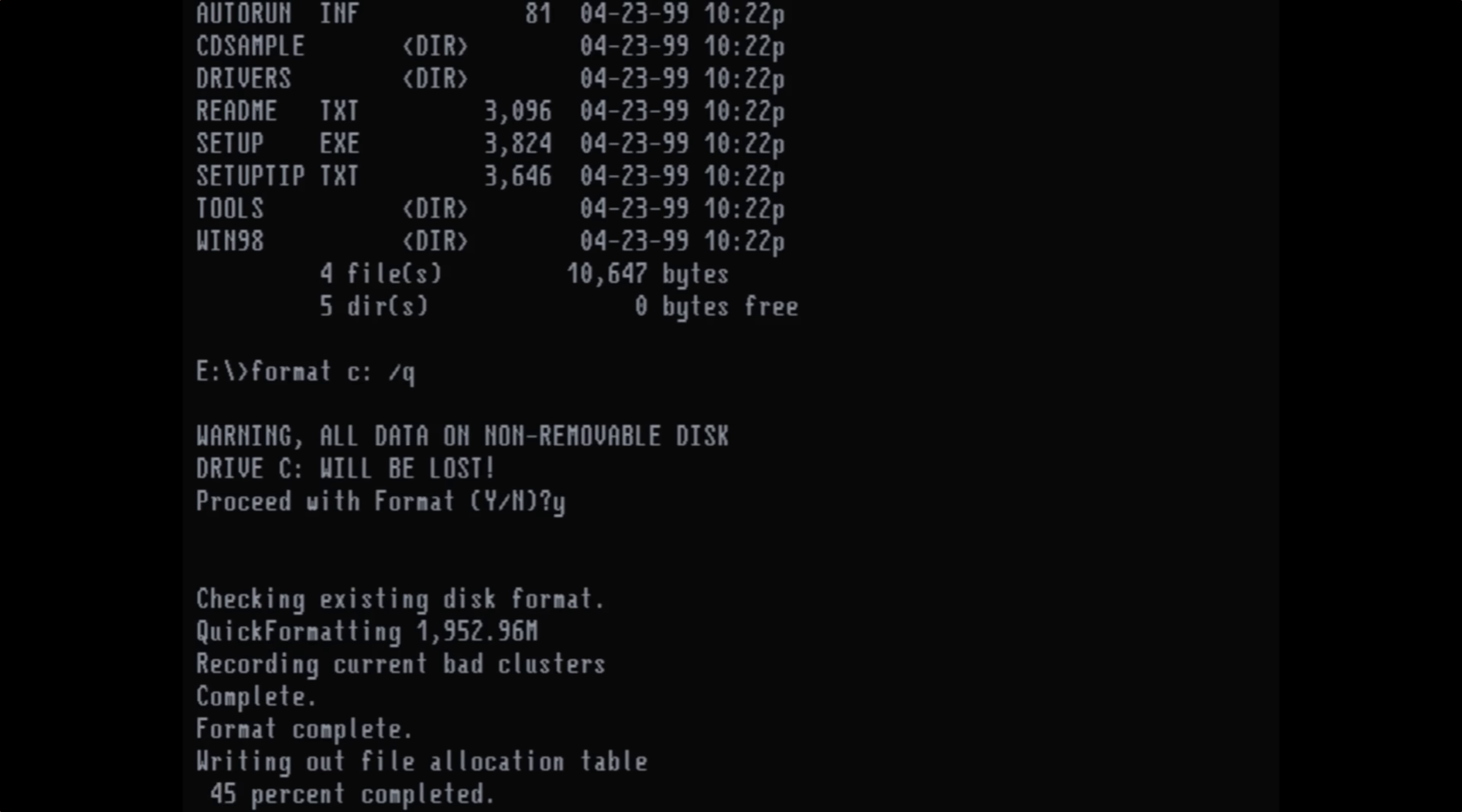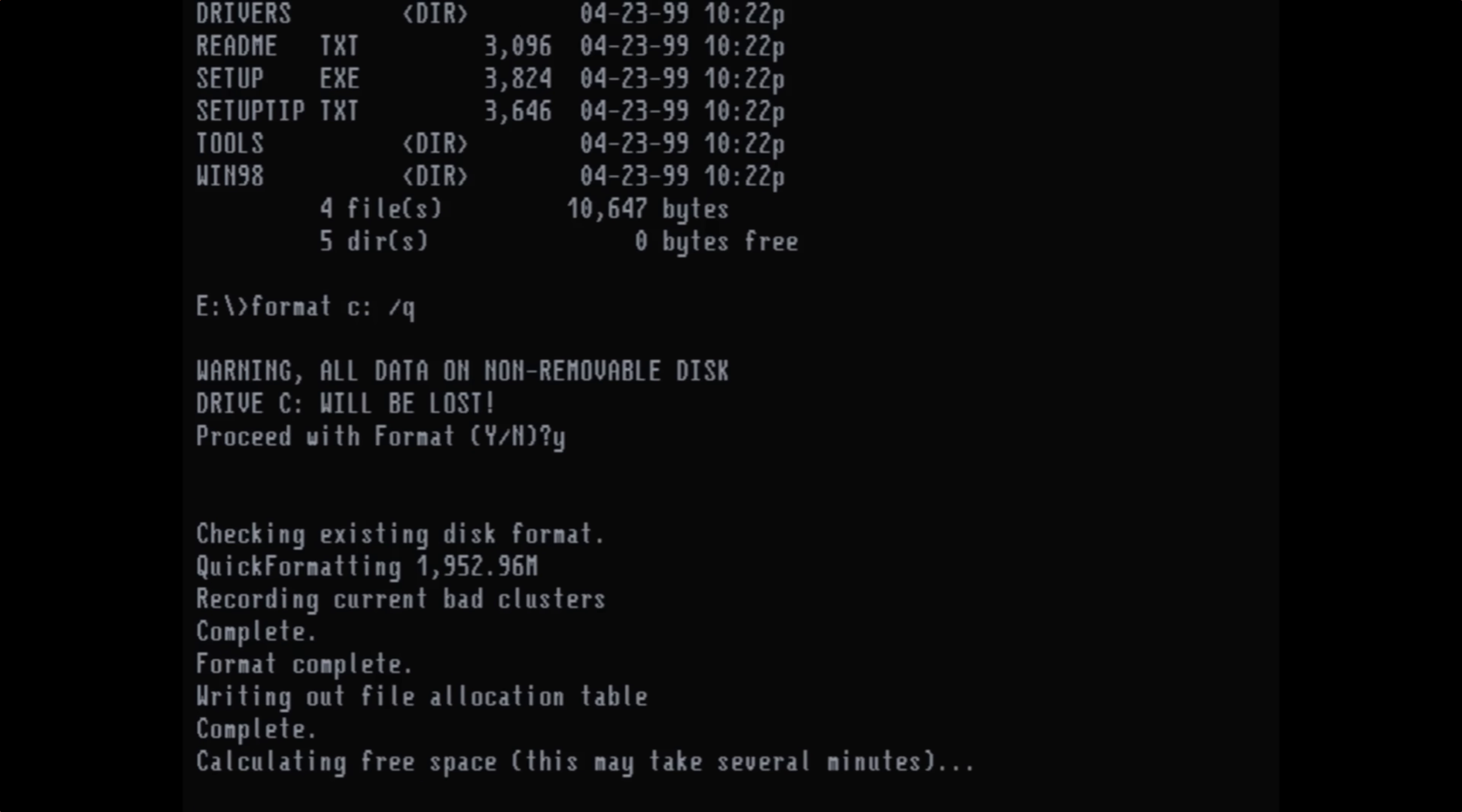Of course, if you have a different version of Windows already on the machine that uses a different file system like NTFS, or if the hard drive is completely blank when you get your retro computer, you're going to need to go through F disk to partition it first. That's kind of outside the scope of this video, but that's really easy to do, and there's tons of tutorials online for that.